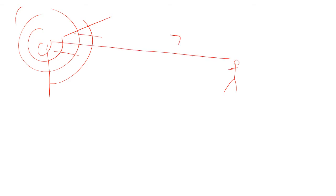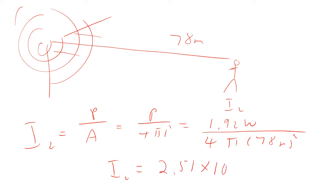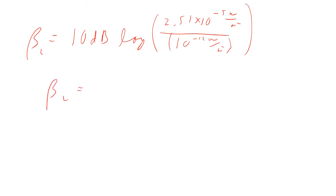The speaker is omnidirectional, so sound goes out equally in all directions. For person 2 at 78 meters, the intensity is power over area: 1.92 W ÷ (4π × (78 m)²) = 2.51 × 10⁻⁵ W/m². The sound level is then 10 × log(2.51 × 10⁻⁵ / 10⁻¹²) = 74 decibels.